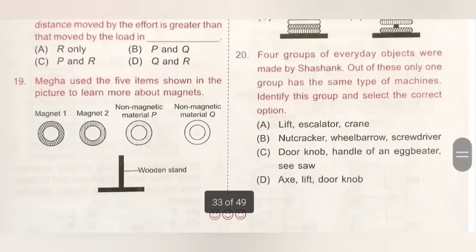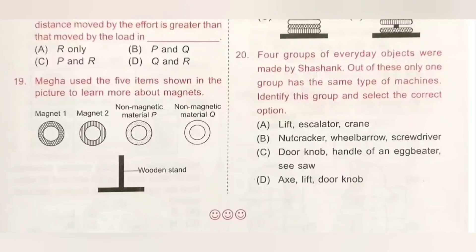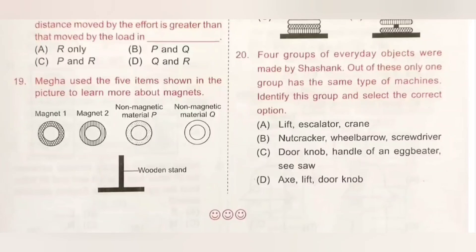Question 20: Four groups of everyday objects were made. Only one group has the same type of machine. Option A: lift, escalator, crane. Option B: nutcracker, wheelbarrow, screwdriver. Option C: doorknob, handle of an eggbeater, saw. Option D: axe, lift, doorknob. Lift, escalator, and crane all use pulleys to function. So option A is the correct answer.